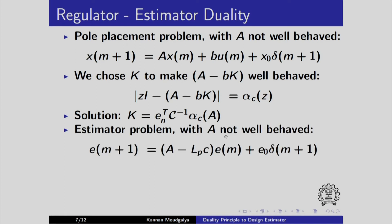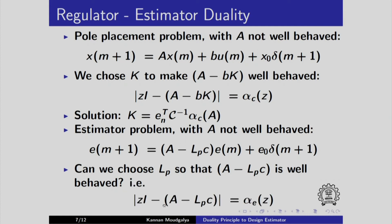The estimator problem is as given here with A not well behaved. We have the error dynamics. The question is, can we choose Lp here so that A minus Lpc is well behaved? We want to make this polynomial equal to alpha E of z. This E now stands for estimator. Here is the estimator polynomial. Can we make this polynomial that comes from pole placement, which is required to make this E better behaved, equal to a desired polynomial? A question. Is alpha E equal to alpha c? We will discuss it in the next slide.